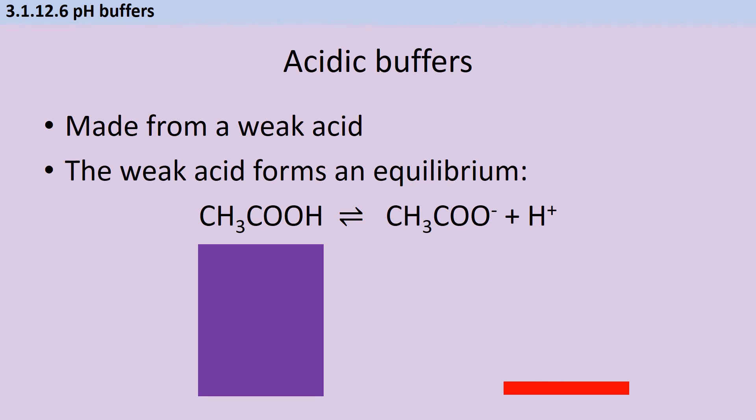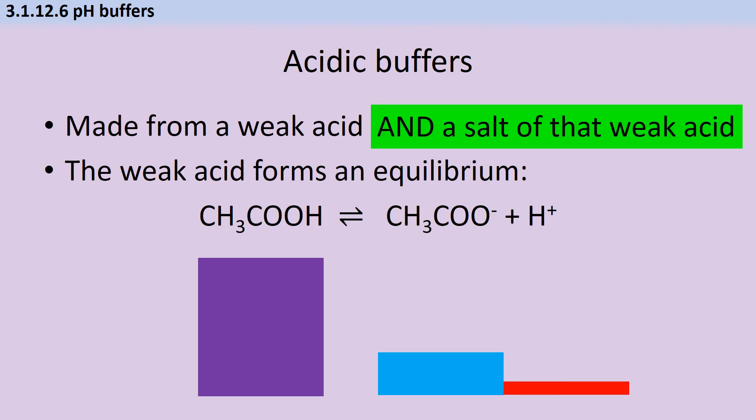Actually, to make an acidic buffer effective at preventing a drop in pH, we need something besides the weak acid. We also need some spare anions to carry on soaking up those hydrogen ions to act as a hydrogen ion sink.